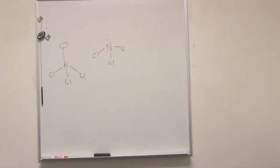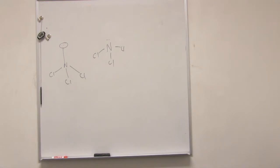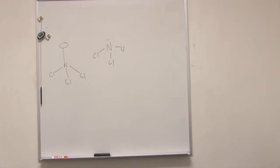Therefore, what is the shape? I know tetrahedral with zero lone pairs is still tetrahedral. Yes. Pyramidal. Yes. Bent is in both. Okay, so it's pyramidal.